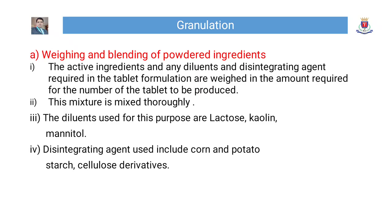Step 1 — Weighing and blending of powdered ingredients: The active ingredients and any diluents and disintegrating agents required in the tablet formulation are weighed in the amount required for the number of tablets to be produced, and the mixture is mixed thoroughly. Diluents used include lactose, kaolin, and mannitol. Disintegrating agents used include corn and potato starch, and cellulose derivatives.